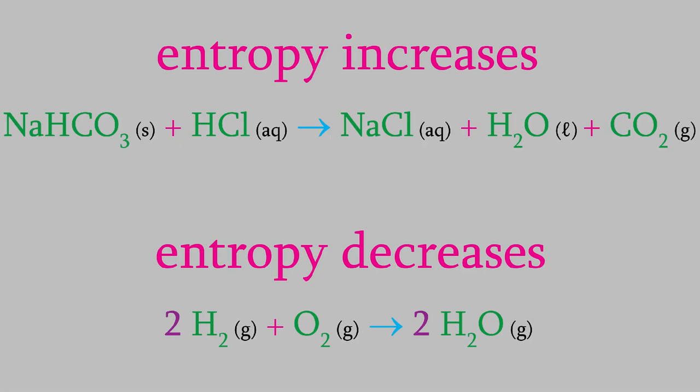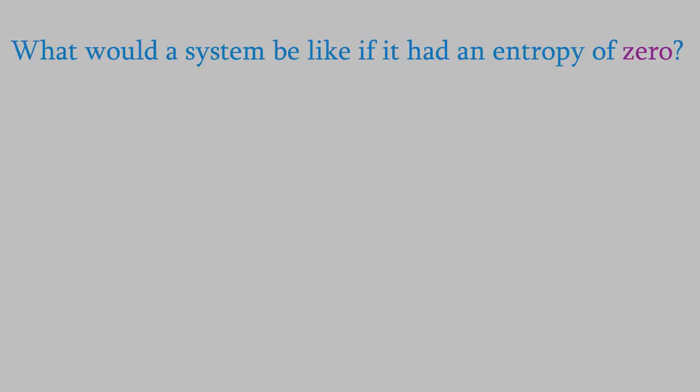You might have noticed that our definition of entropy is a little bit vague. We said it's the amount of disorder in a system, but how do you quantify disorder? How can we put a number on something that's as hard to define as the amount of randomness? One thing we can do is to try to decide what something would look like if it had no disorder at all. What would a system look like if it had zero entropy?